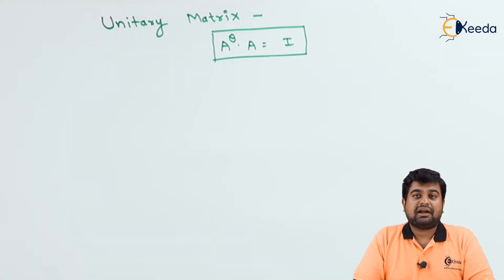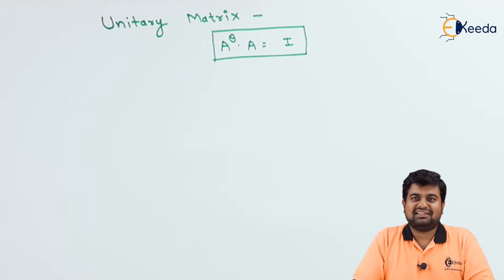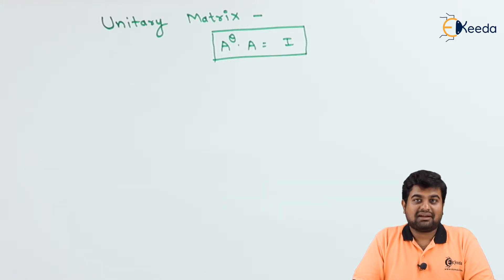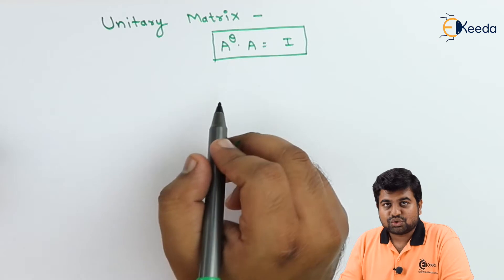A unitary matrix is defined as follows: if we take any matrix A and its complex conjugate transpose A-theta, and if the multiplication of A-theta and A comes out to be the identity matrix I, then the matrix A is said to be a unitary matrix.